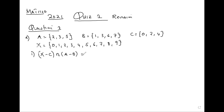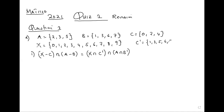If we simplify, X minus C intersection A minus B is the same as X intersection C complement, intersection A intersection B complement. So what do we need? We need C complement. C complement is {1, 3, 5, 6, 7, 8, 9}.